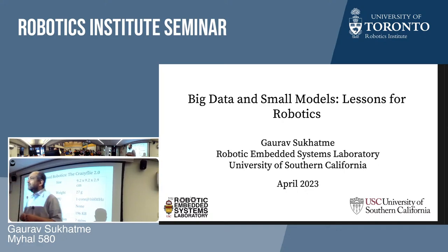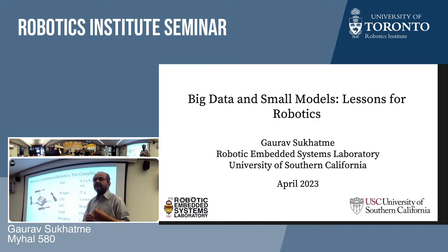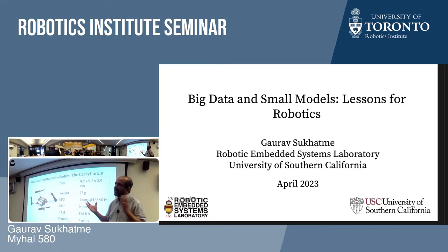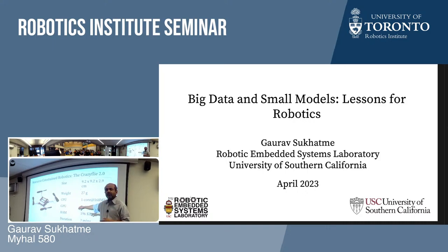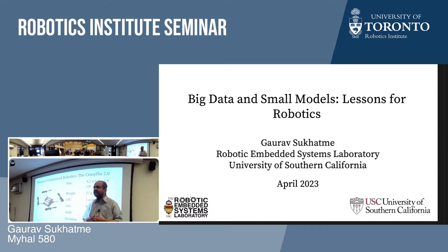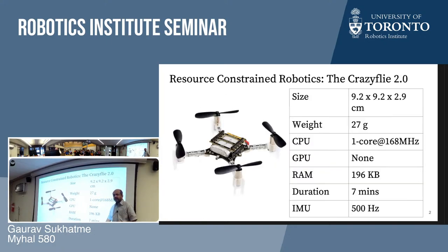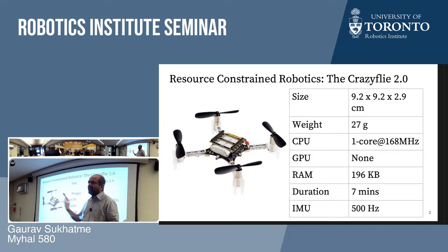The robot in this talk is one that many of you have programmed — the Crazyflie. It's a particularly good instance of a highly resource-constrained robot. It's very small, just 10 by 10 centimeters, less than 30 grams, has no GPU, a very modest CPU, a small amount of RAM, and a flight lifetime of just a few minutes — typically four to five, maybe six or seven if you're lucky. It does have a respectable IMU, generally used in a best-effort fashion.